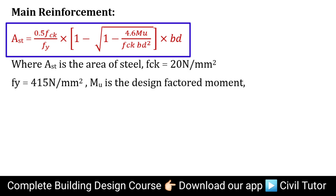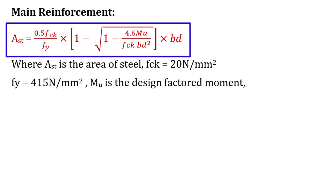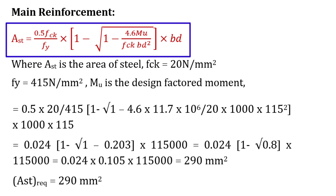Where AST is the area of steel, FCK is the characteristic compressive strength of concrete. Since we are using M20 grade of concrete, FCK = 20 N/mm² and Fy = 415 N/mm². Mu is the design factored moment already calculated in our previous lecture. B is 1 meter and D is the effective depth of the slab, already calculated as 115 mm. On substituting all these values, the required area of steel is 290 mm².